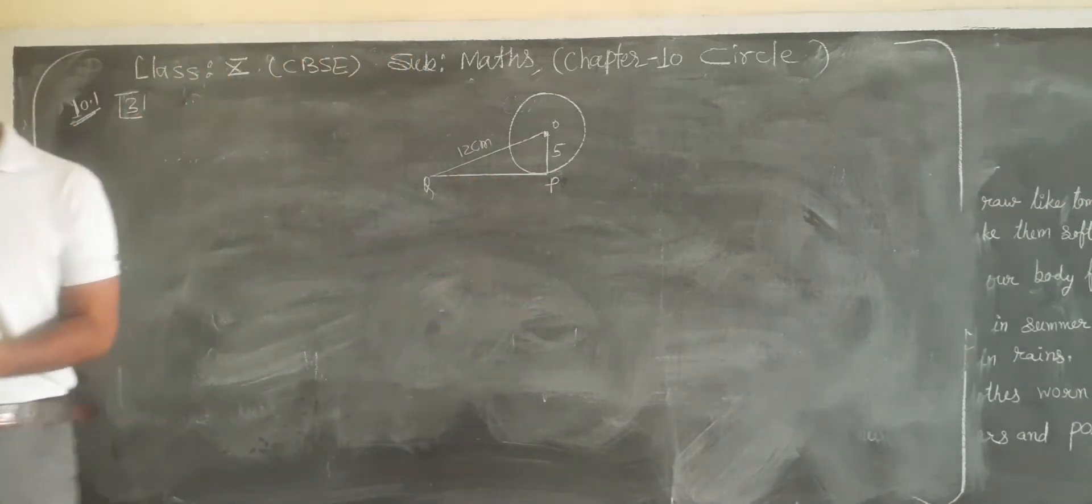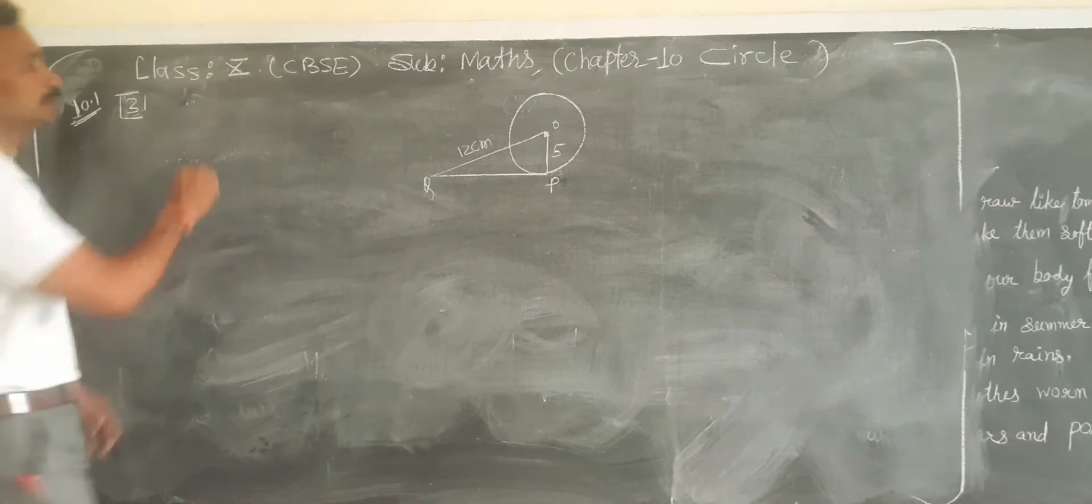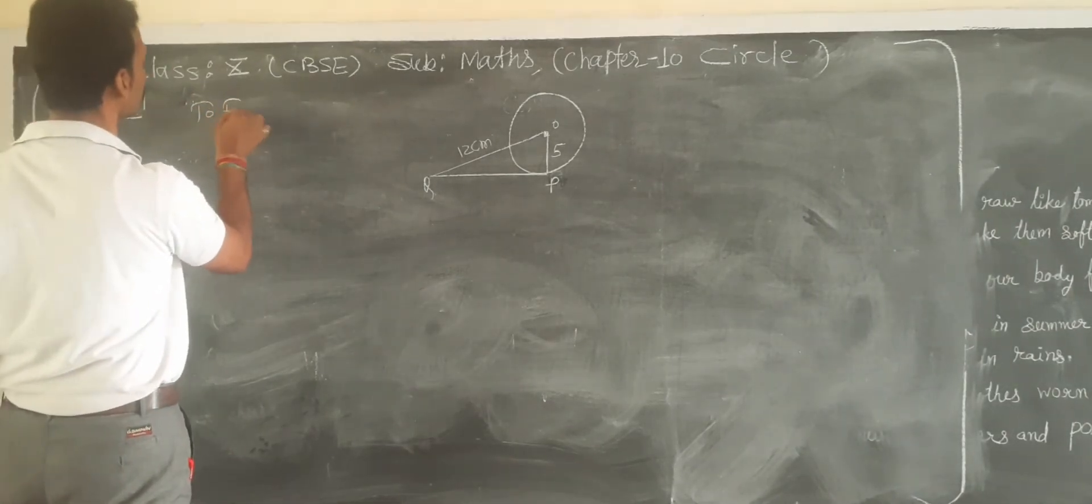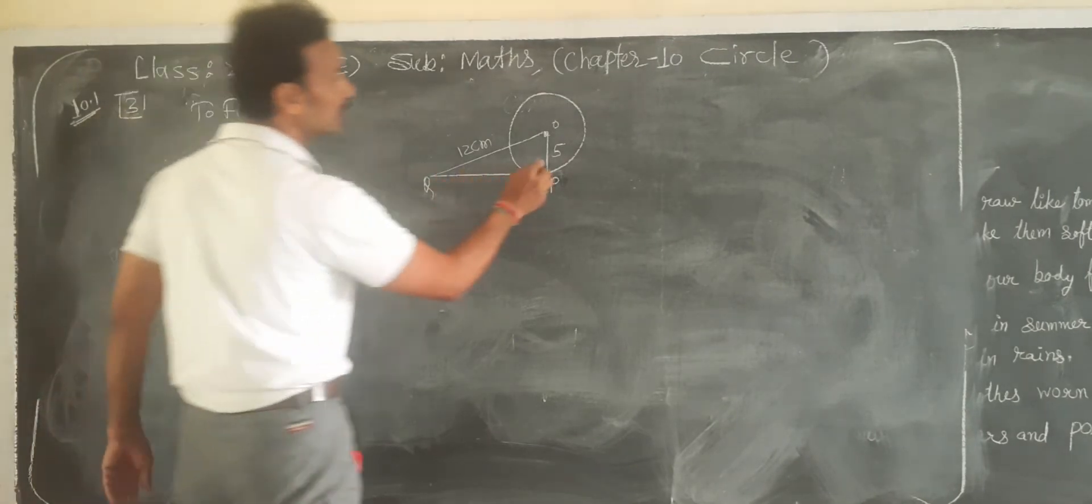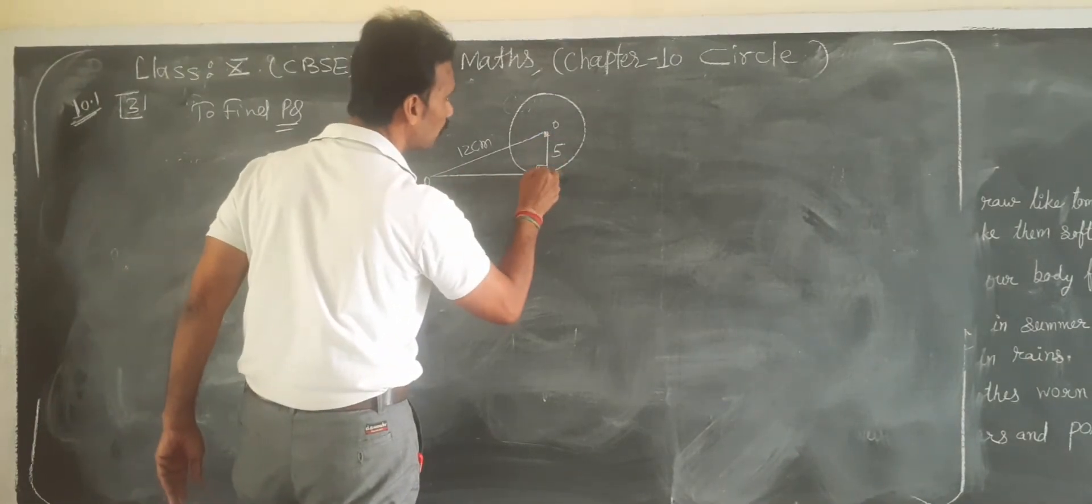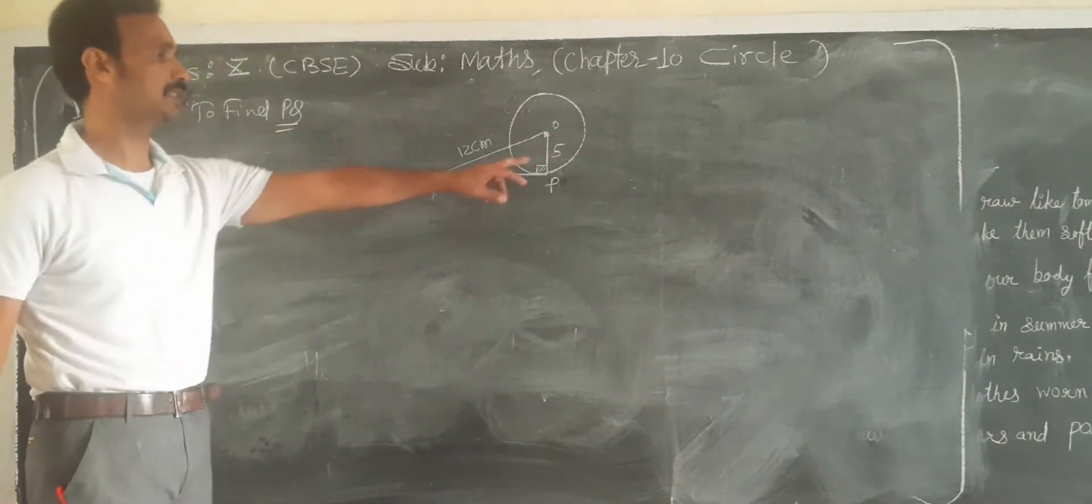Find the length of PQ. So the center, it is a tangent, so this means this is a right angle.